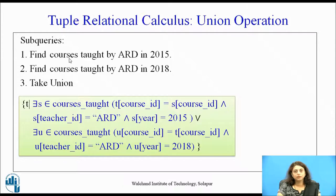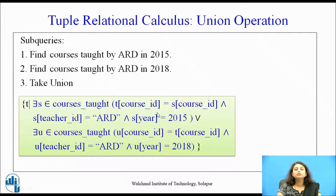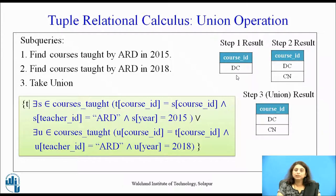The second part of the union query is: ∃u ∈ courses_taught (u[course_id] = t[course_id] ∧ u[teacher_id] = 'ARD' ∧ u[year] = 2018). These two sub-queries find the respective sets and union is applied, giving all tuples taught in 2015, 2018, or both. Since it is a set, duplicates are removed — so the result is DC.